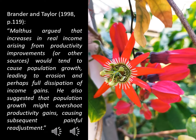Others have explained his theory as follows. Malthus argued that increases in real income arising from productivity improvements or other sources would tend to cause population growth, leading to erosion and perhaps full dissipation of income gains, and also suggested that population growth might overshoot productivity gains causing subsequent painful readjustment. In other words, Malthus warned that if population growth is not kept under control with preventative measures lowering birth rates, the population will outgrow the carrying capacity of its environment and collapse through higher death rates. The latter mechanism is also known as the Malthusian catastrophe.